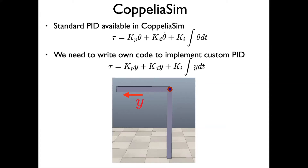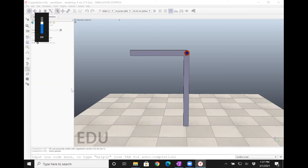What we have seen so far in CoppeliaSim is if you want to do a joint control, for example the pendulum, you do torque equals PID. This is a formula for PID but you can only do that with the joint angle. If you wanted to make this pendulum upright by setting the Y-coordinate to zero, which is basically saying theta equals zero, then you need to set a PID on Y. In order to set the PID in code, you need to write your own PID in simulation in Lua, and my goal is to explain to you how to do this.